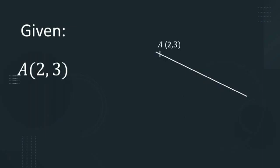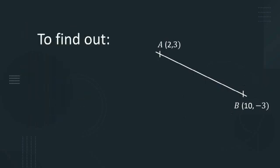What has been given here? A straight line with the points A, B. What we have to find out? The distance between A and B.